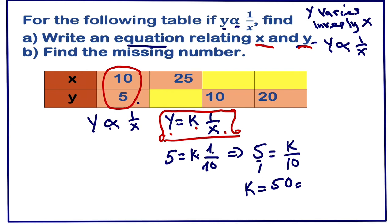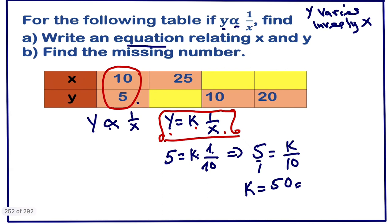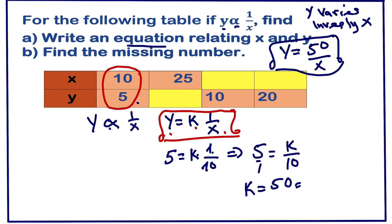Don't forget to always write this equation — without it you will be unable to complete the table, even if they don't ask for it. So the answer to part (a) is y = 50 over x.